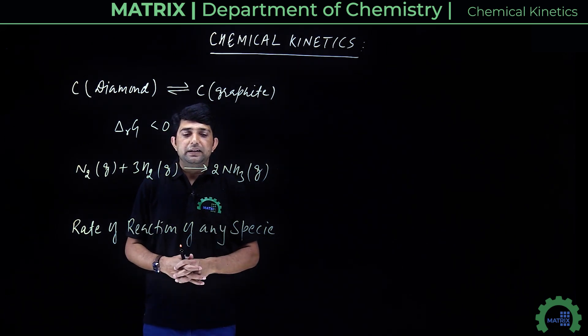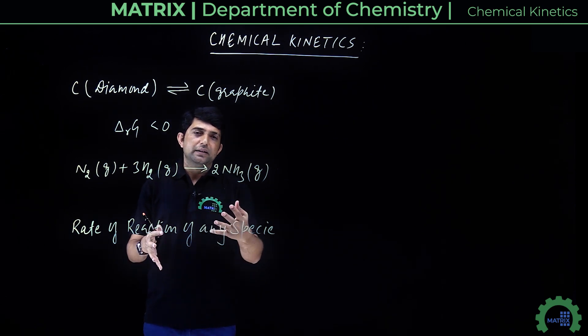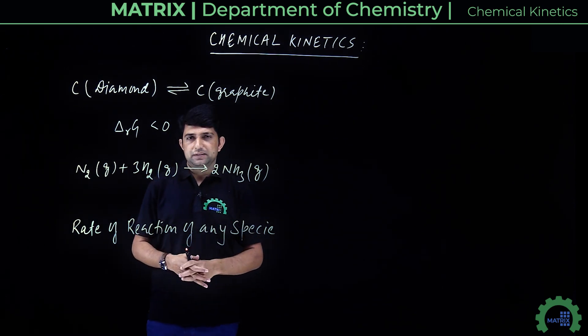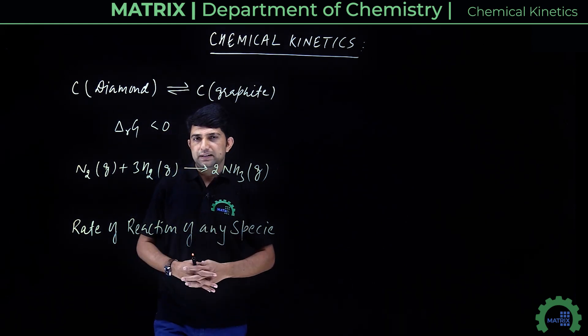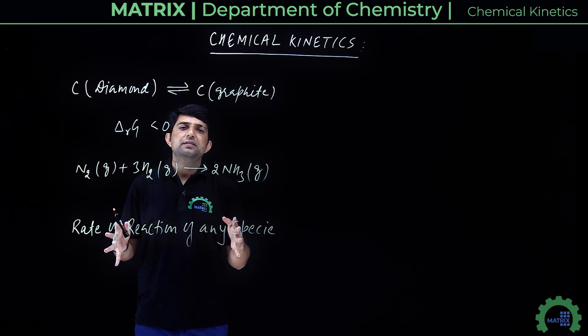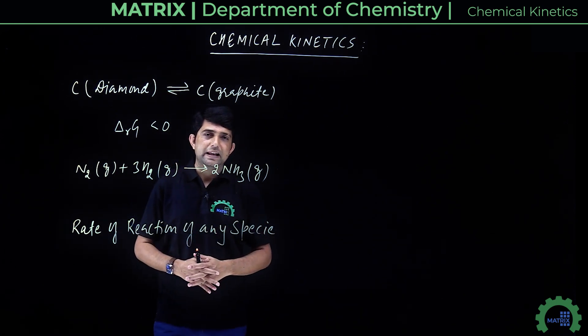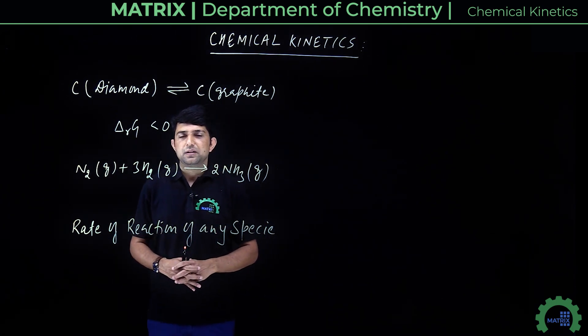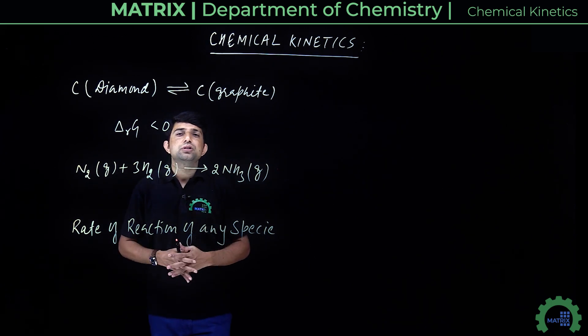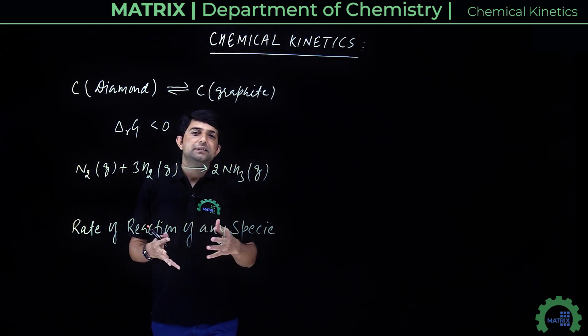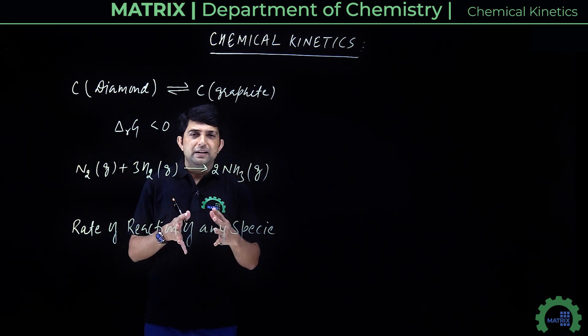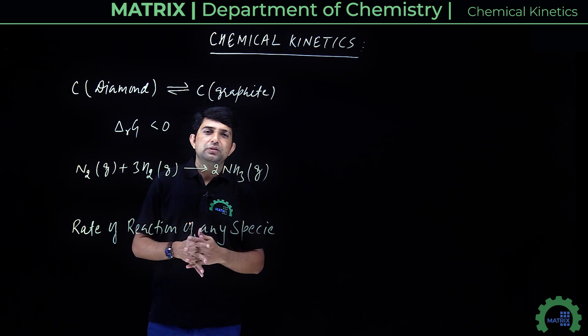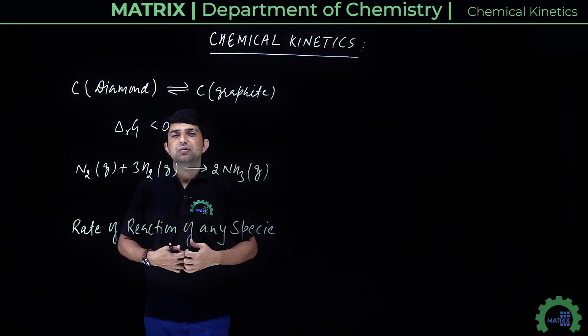Now, what factors affect the rate at which any reactant or product is formed or consumed? Some reactions are very fast, like precipitation reactions. Some reactions are very slow, like rusting of iron. And some reactions have a moderate rate, neither too fast nor too slow.